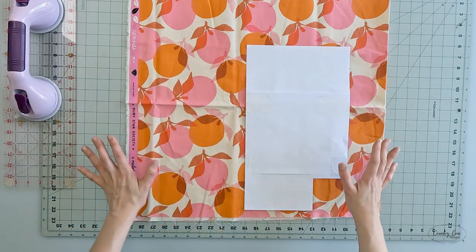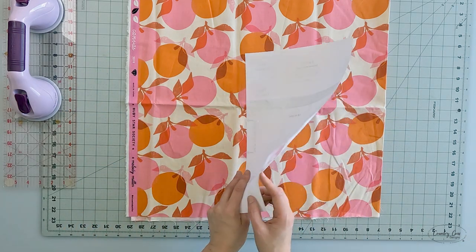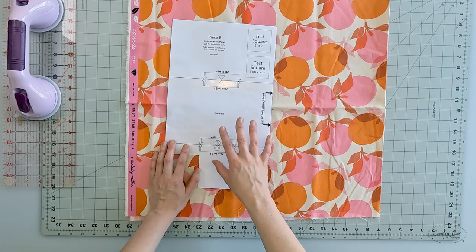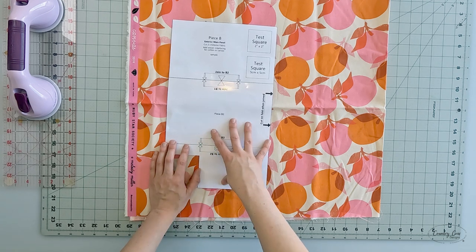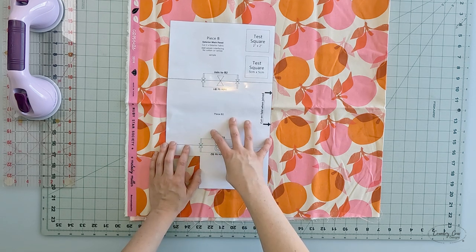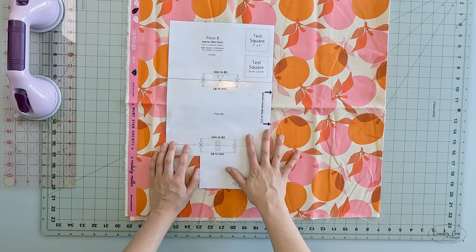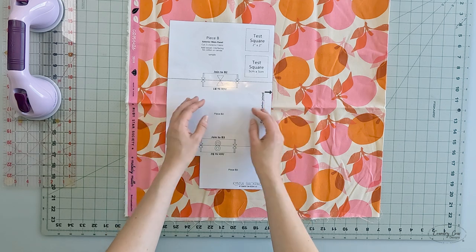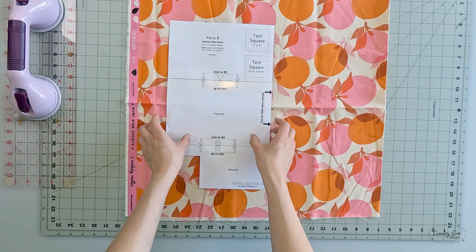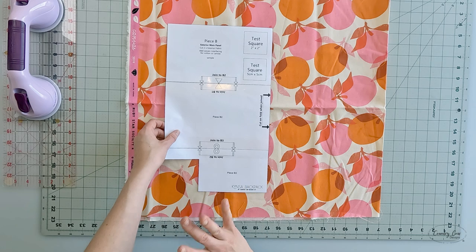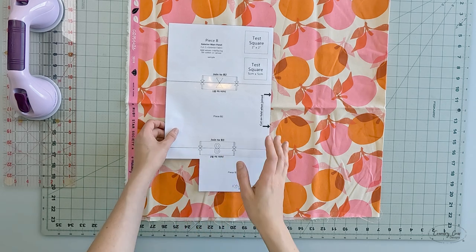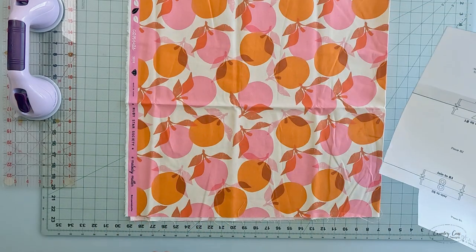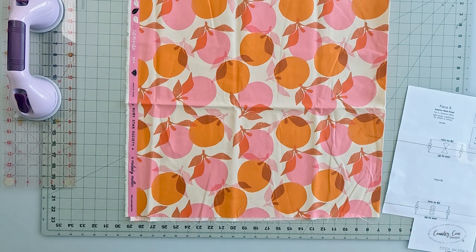If you want your pattern pieces to be more durable, you could consider cutting them out of card, or you could laminate them, or you could use sellotape across the whole thing to make it more durable. There's a few different options. The ultimate option if you're making a lot of the same bag is an acrylic template.